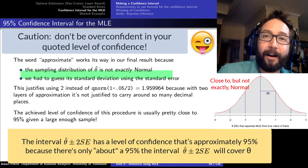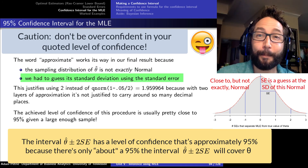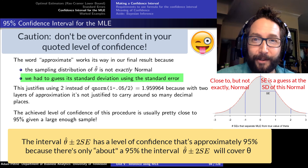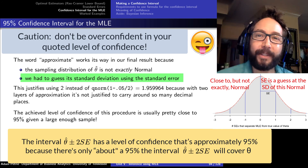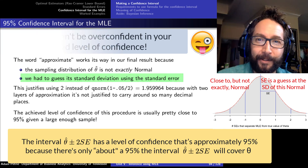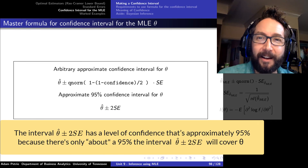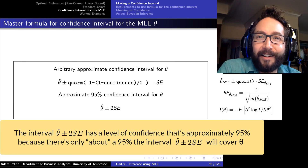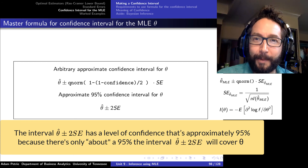Additionally, our formula for the standard error required us to plug in the MLE value measured from the sample into the Fisher information formula. Since we're guessing at what that standard deviation is, there's a second layer of approximation to take into account. When we use our master formulas for these confidence intervals, they have approximately the level of confidence specified.